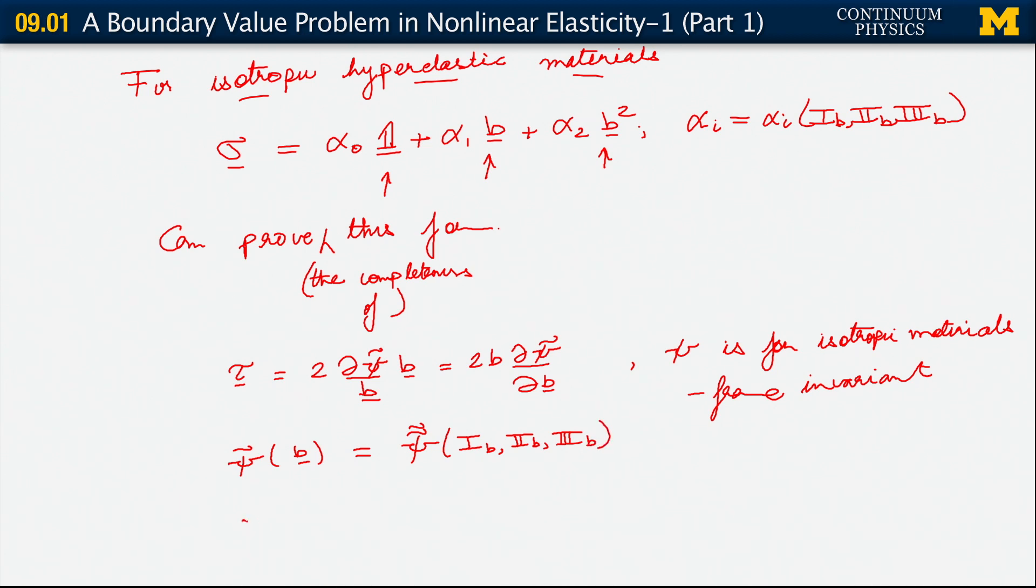And therefore, our expression for the Cauchy stress is 1 over j, twice the derivative with respect to B of now a psi double hat which depends upon B through its invariants only, through its principal invariants.